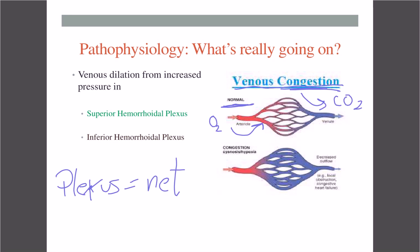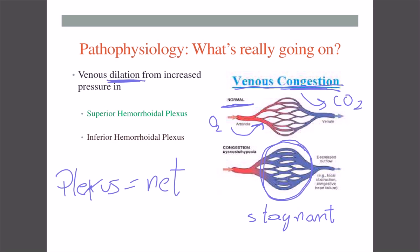However, with congestion, the movement of blood becomes stagnant — that's what congestion means. As you can see in this picture, the veins are getting dilated; they're getting bigger, the blood is not moving as much as it should. There are various reasons as to why that may be, but that is the actual pathophysiology — what's going on in this hemorrhoidal plexus.